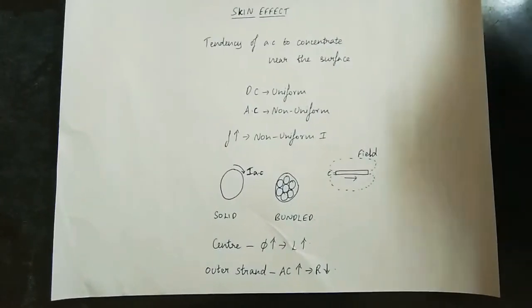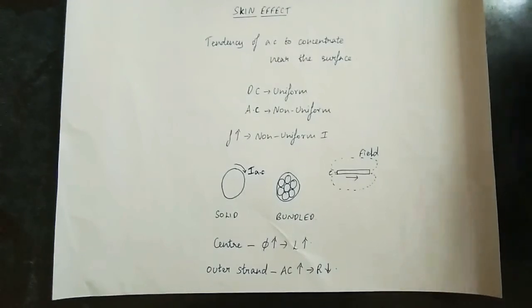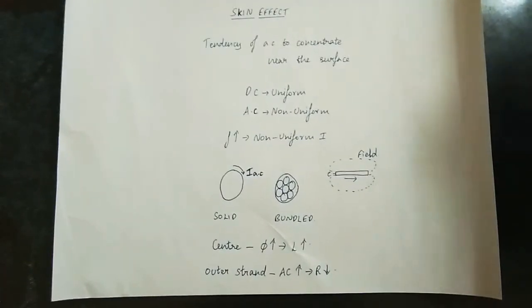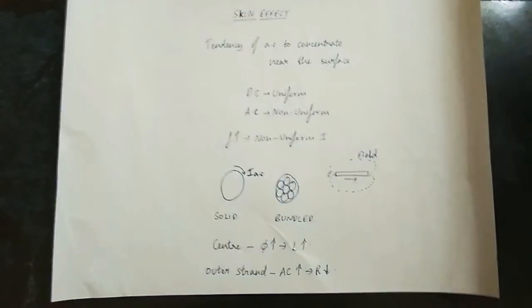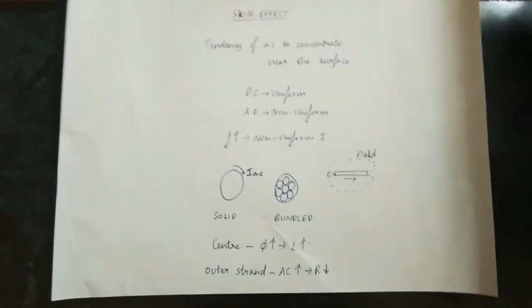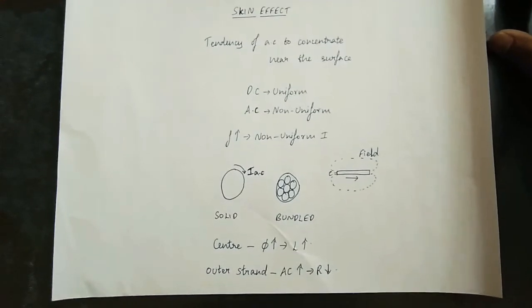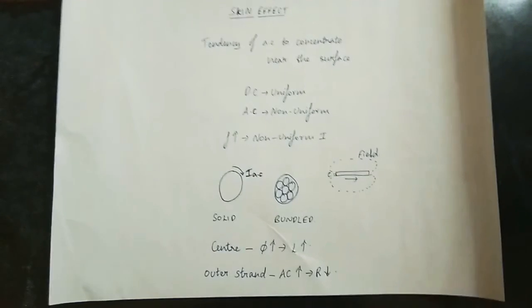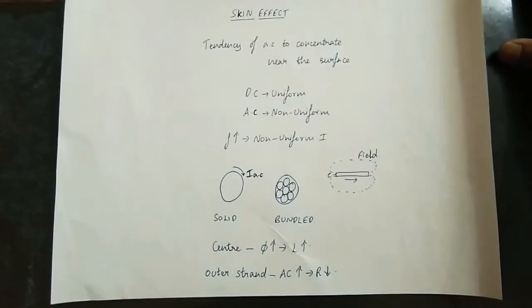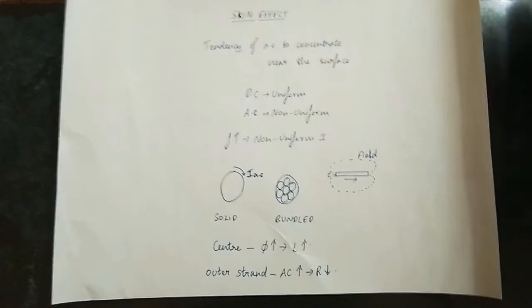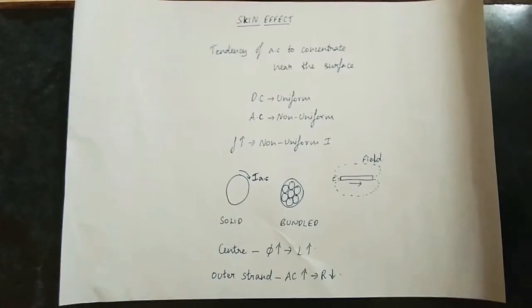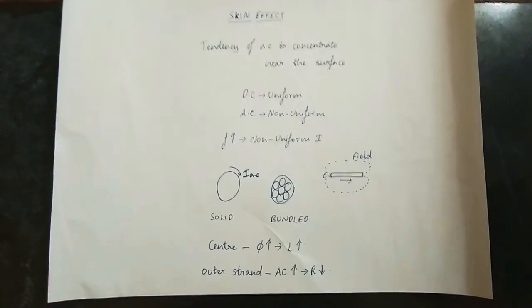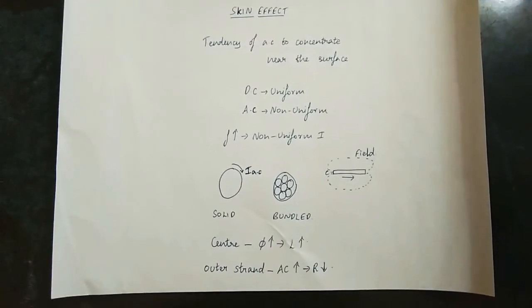Inductance has the property — a tendency to oppose the rate of change of current. The current change is opposed. So the current in the center changes. When you have AC, it constantly changes. We can control the current. If the current is changing, the inductance opposes it. On the other hand, we can see that the current is changing continuously.